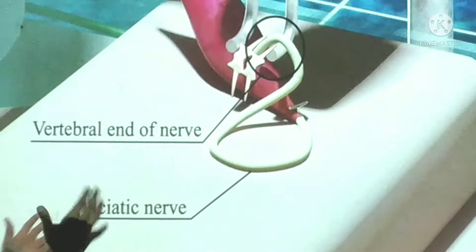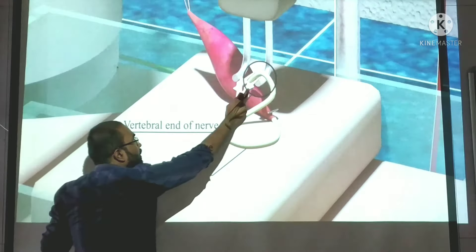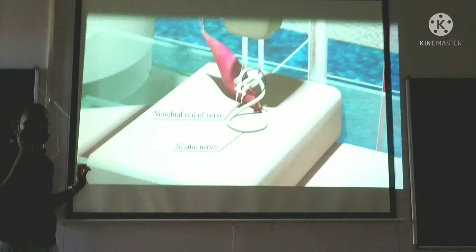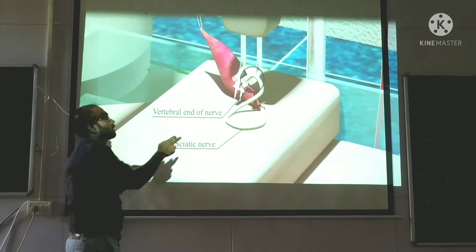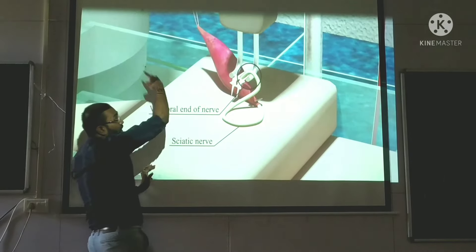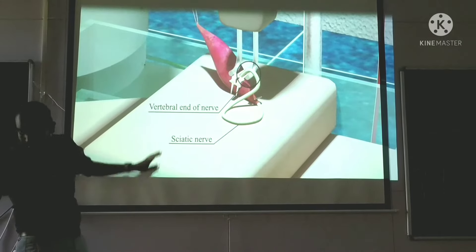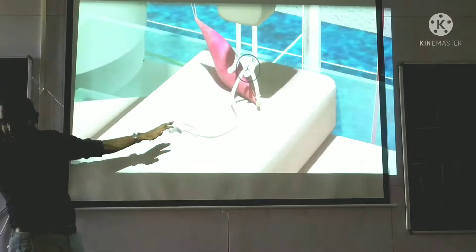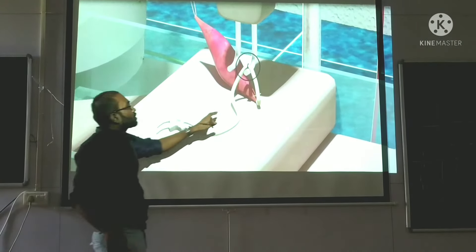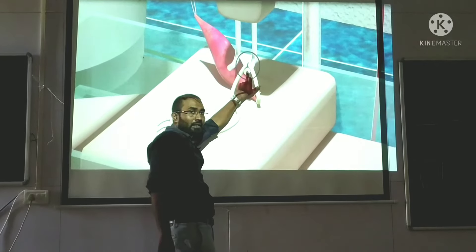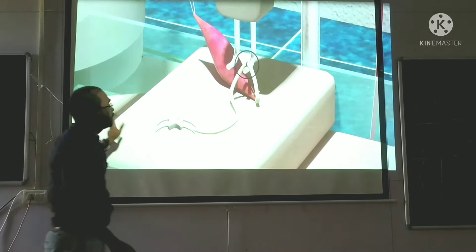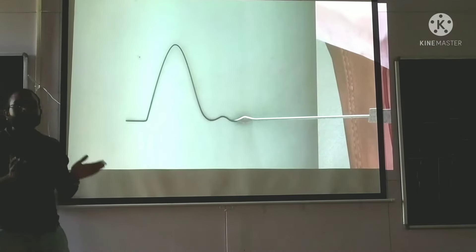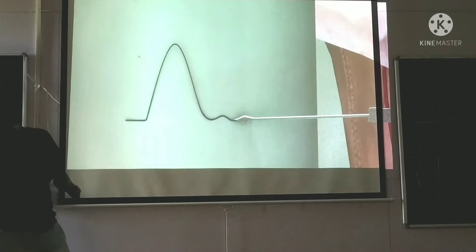At the vertebral end of the nerve, first they will give a stimulus here. When you give a stimulus here, there is a graph link — you take a graph. Then after this, you will give a stimulus to the muscular end and take another graph. So you have taken graphs from both the vertebral end and the muscular end.